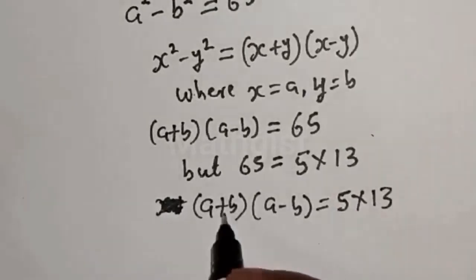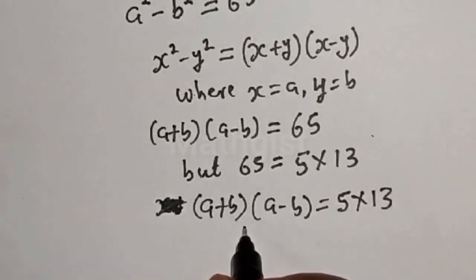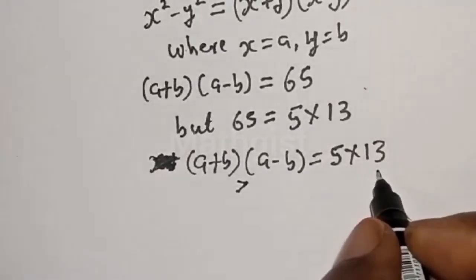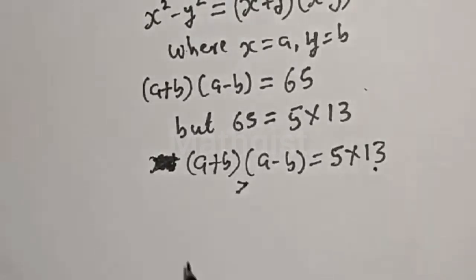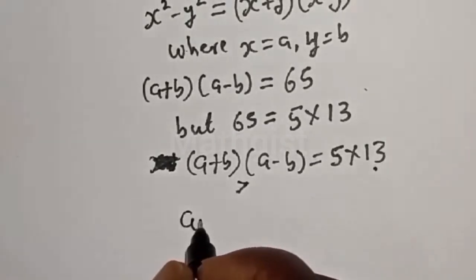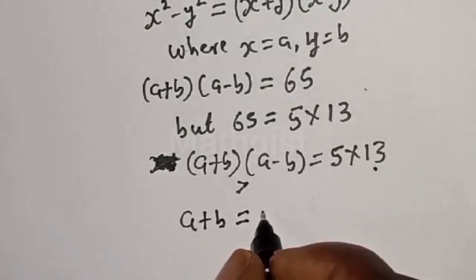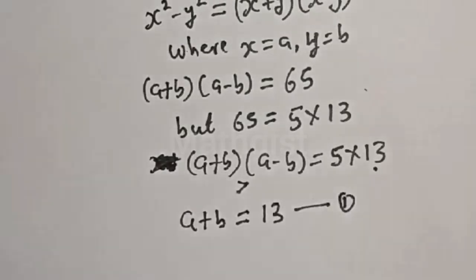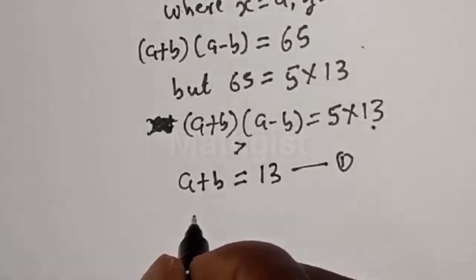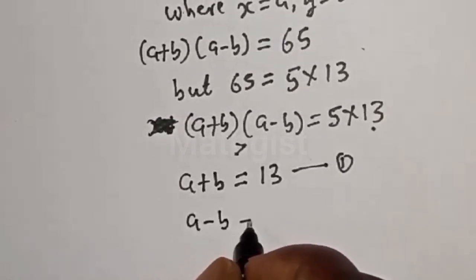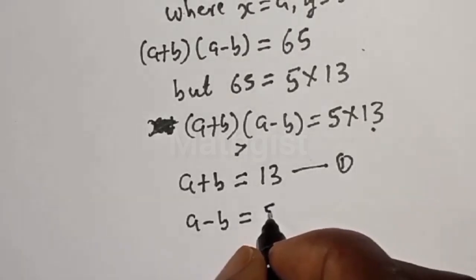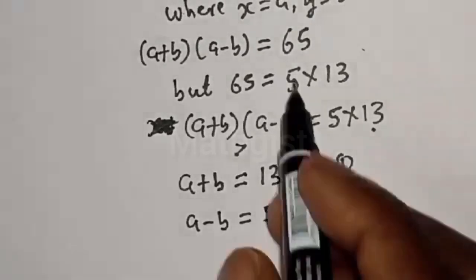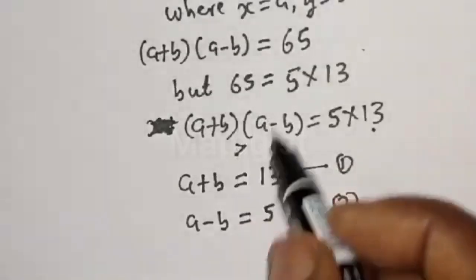Since a+b is greater than a-b, and 13 is greater than 5, we set a+b = 13 — call this equation 1 — and a-b = 5 — call this equation 2 — where a and b are positive integers.